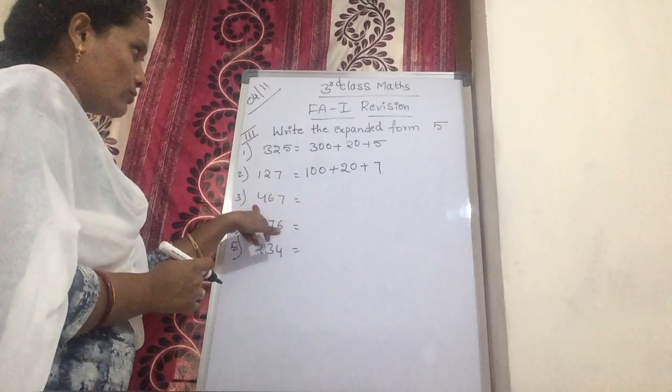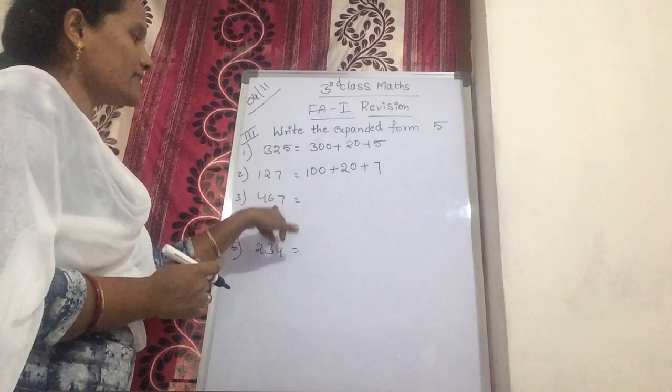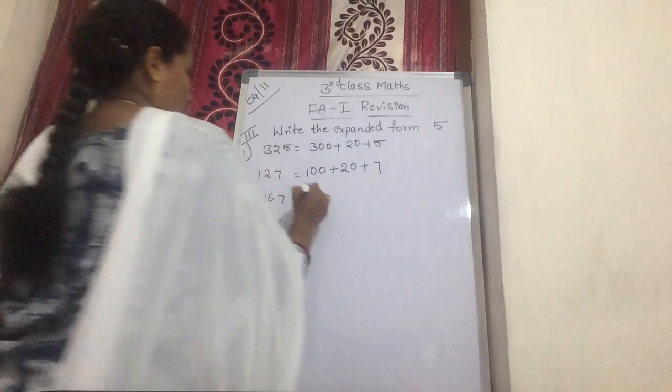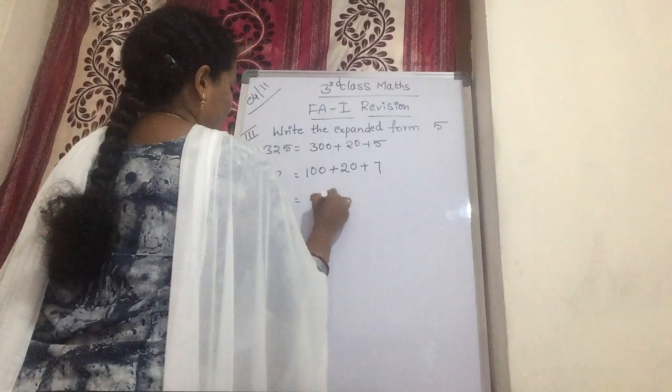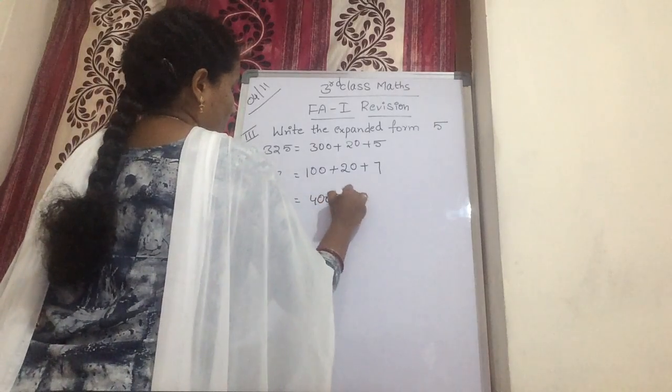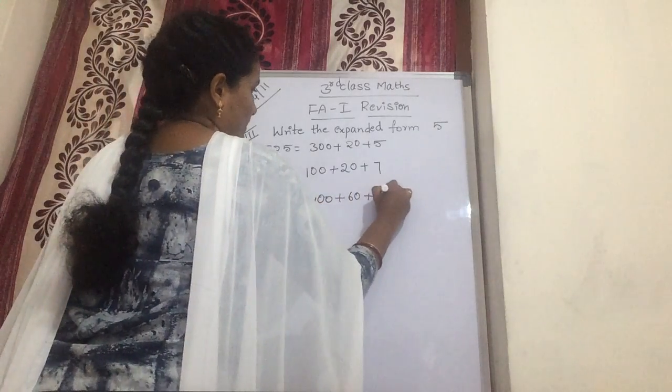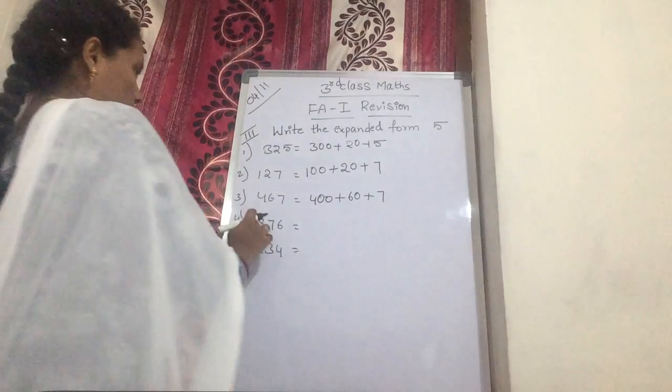Now next: 467. That gives 400 plus 60 plus 7. Okay.